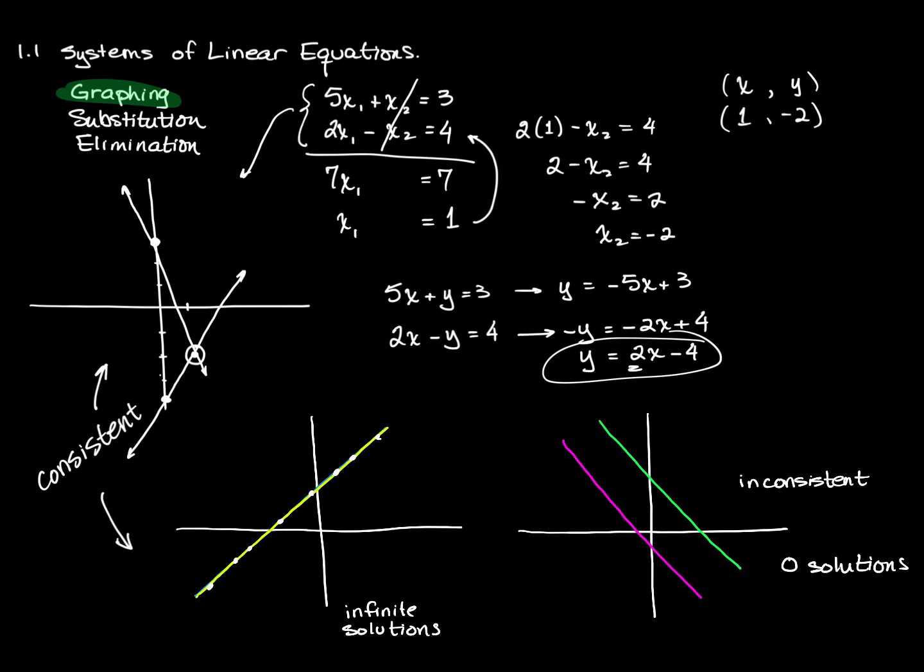So a system of linear equations can either have zero solutions, one solution, or an infinite number of solutions. These are consistent. This one is inconsistent.